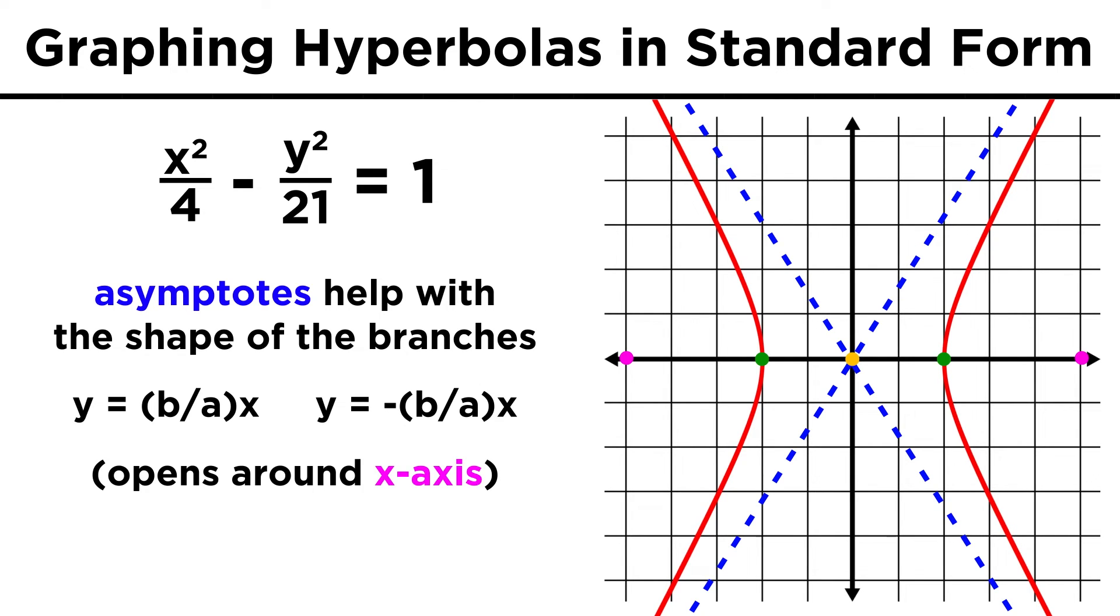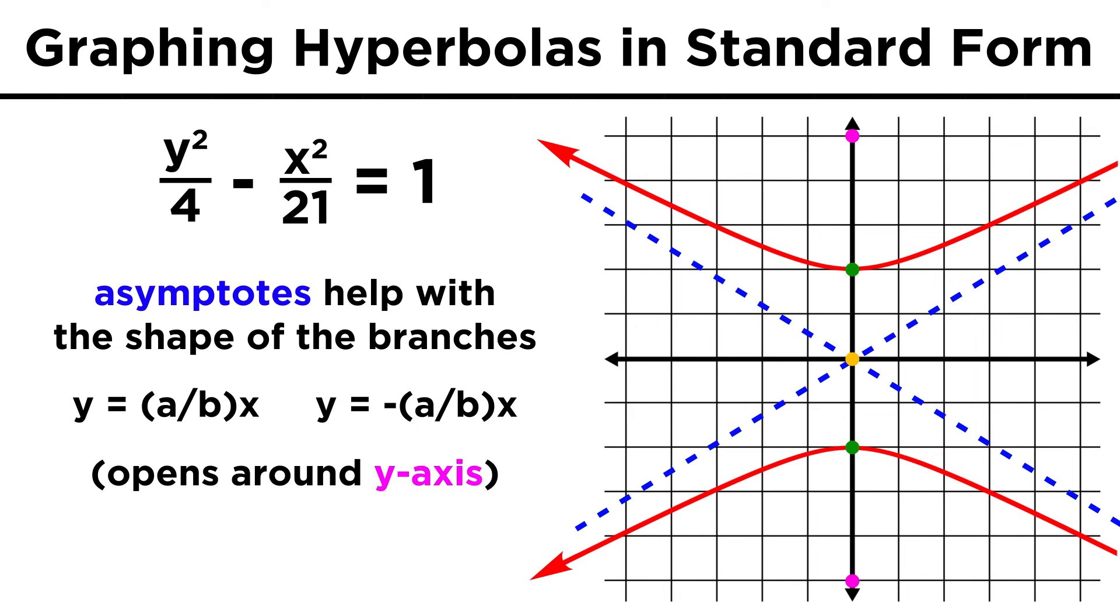For a hyperbola that opens around the x axis, these asymptotes are given by the equations y equals b over a times x, and y equals negative b over a times x. For a hyperbola that opens around the y axis, the asymptotes are given by the equations y equals a over b times x, and y equals negative a over b times x. If you draw these asymptotes with dotted lines, they can help you draw the hyperbola a bit more accurately.